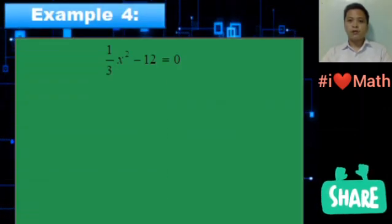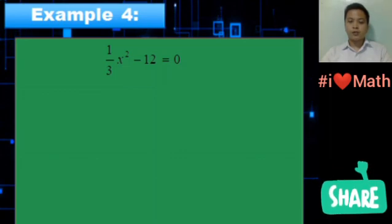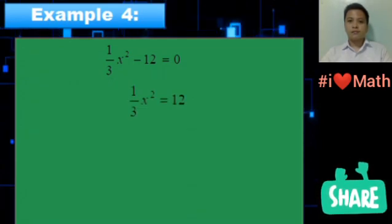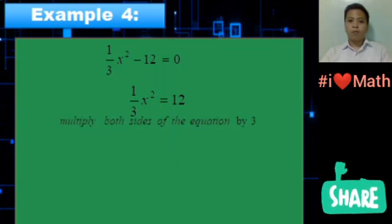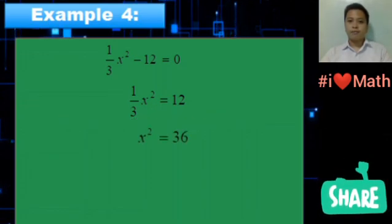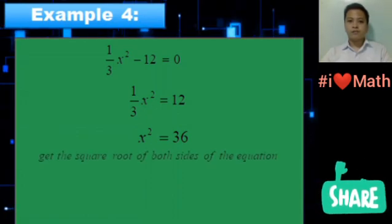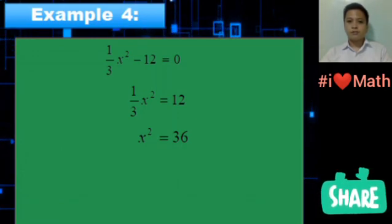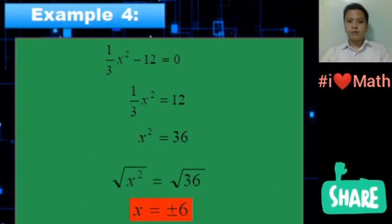Example 4: (1/3)x² - 12 = 0. Transpose -12 to the right side — we will get (1/3)x² = 12. Multiply both sides of the equation by 3 — we will get x² = 36. Get the square root of both sides of the equation and the answer is x = ±6.